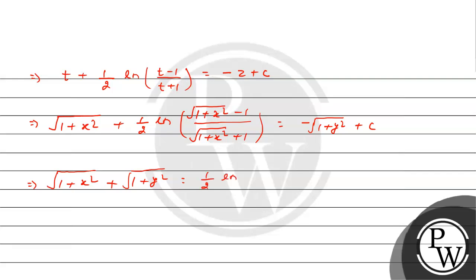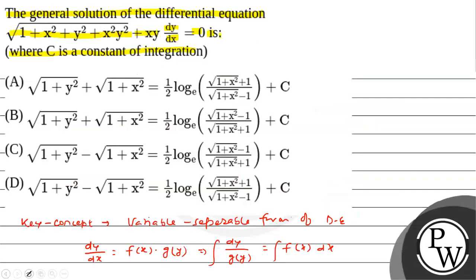Rearranging, using log properties — log m minus log n equals log(m/n) — the final answer becomes: square root(1 plus x squared) plus square root(1 plus y squared) plus (1/2) log of (x squared plus 1 term) equals c. Checking the options, option A matches: square root(1+x²) plus square root(1+y²) plus (1/2) log of the relevant expression plus c. So option A is the correct answer.